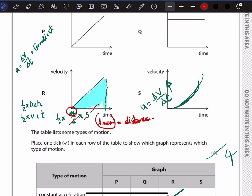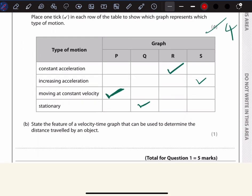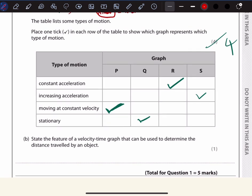So from the area under the graph I can calculate the distance, how much I covered as a moving object. Back to the question: state the feature of a velocity-time graph that can be used to determine the distance traveled by an object. The correct answer is to